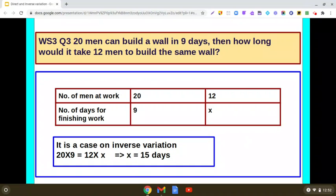So we know that if x and y are two quantities which are in inverse variation, then product of x and y is constant. So here 20 into 9 should be equal to 12 into x. Now simplify this and we get x as 15.